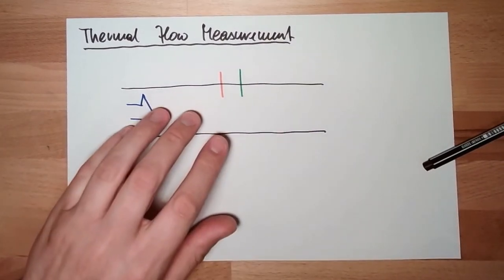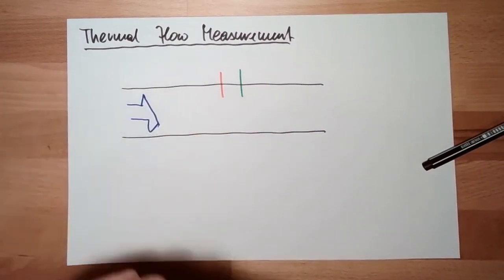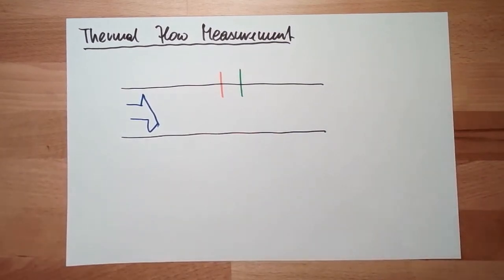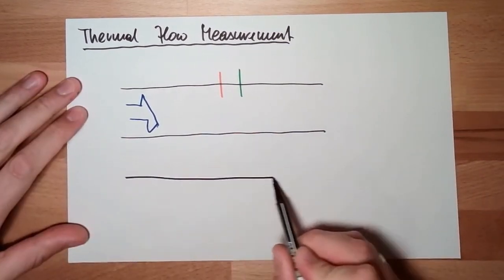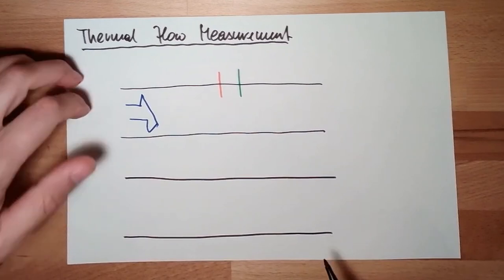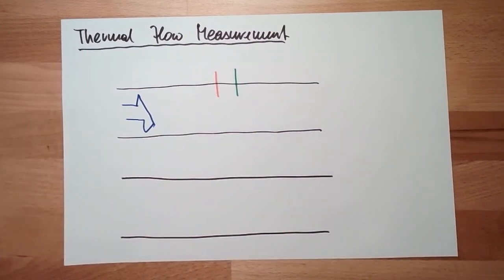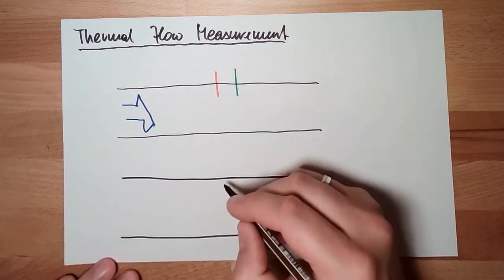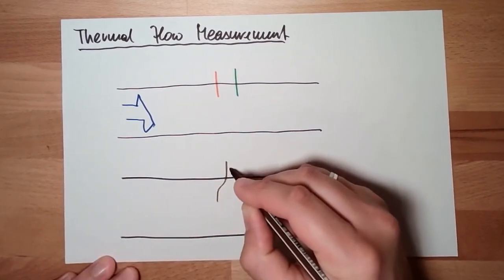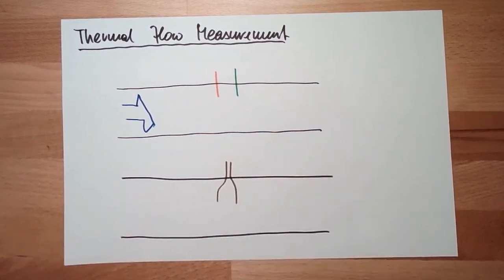The one method, the heating up method, and there is also another method where we have one thing inside, looking like this somehow.